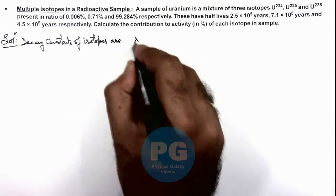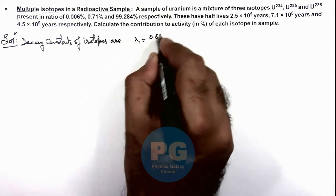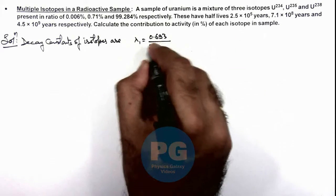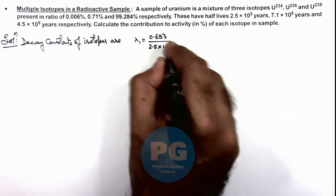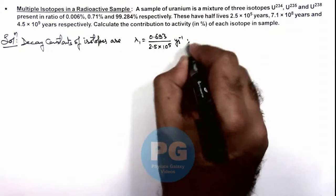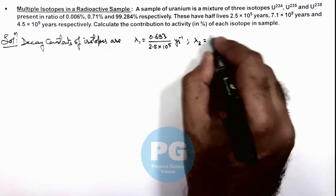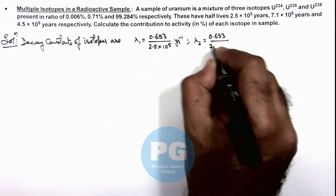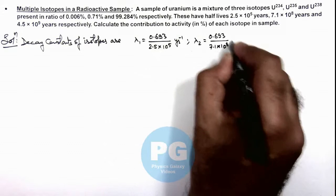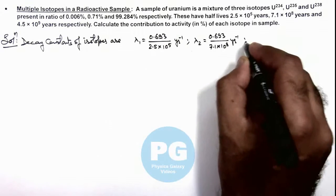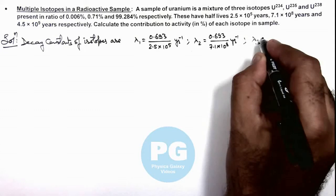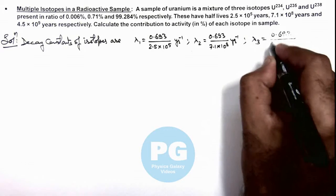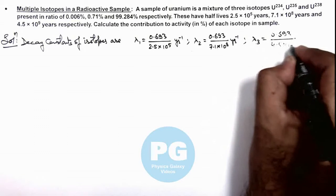These are given as lambda 1 is 0.693 by the first half life, 2.5 × 10^5 per year. For the second isotope it is 0.693 by 7.1 × 10^8 year inverse. And that of the third isotope is 0.693 by 4.5 × 10^9 per year.